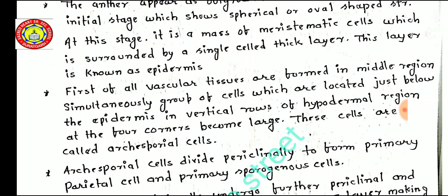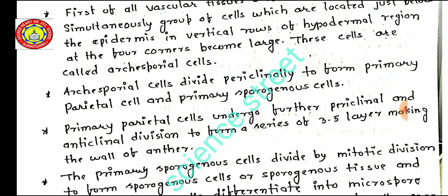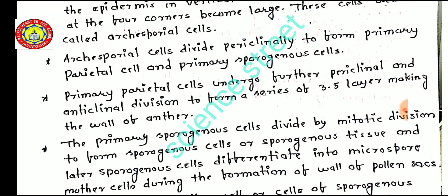We will discuss this in diagrammatic representation as well. Archesporial cells divide periclinally to form a primary parietal cell and a primary sporogenous cell — so two cells are formed after periclinal division. The primary parietal cell undergoes further periclinal and anticlinal divisions to form a series of three to five layers making the wall of the anther — that is, the endothesium, middle layer, and tapetum — all formed by the parietal cell.